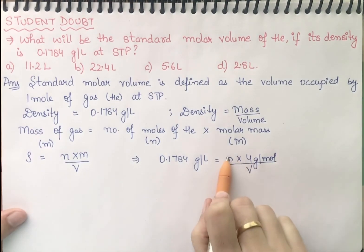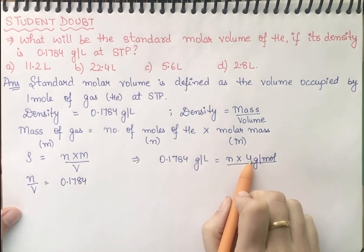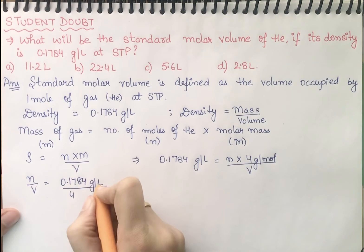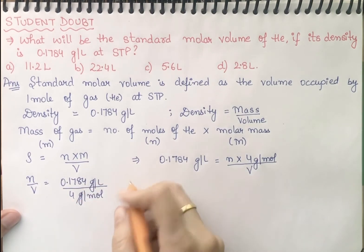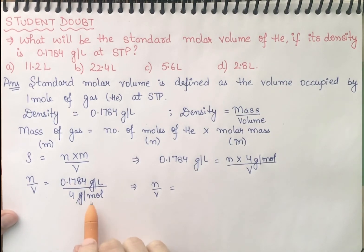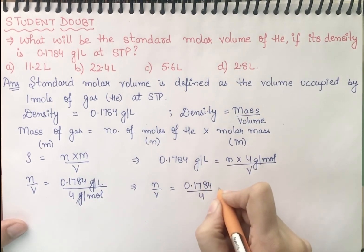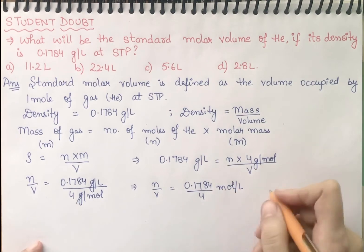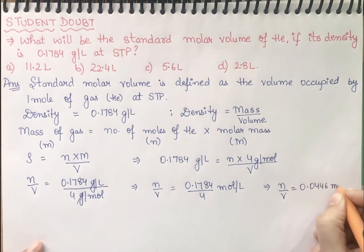Now I will take these two values on one side. So n by V equals 0.1784 gram per liter divided by 4 gram per mole. I will cancel gram with gram — mole is in the denominator of the denominator, so it goes into the numerator directly. So: 0.1784 divided by 4 gives n by V equal to 0.0446 mole per liter.